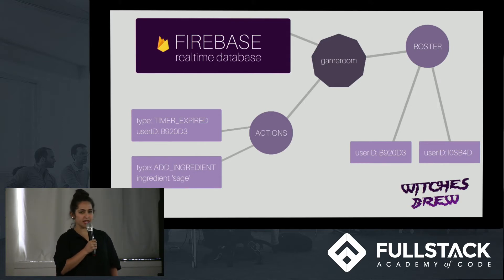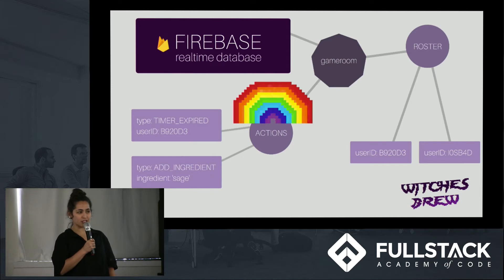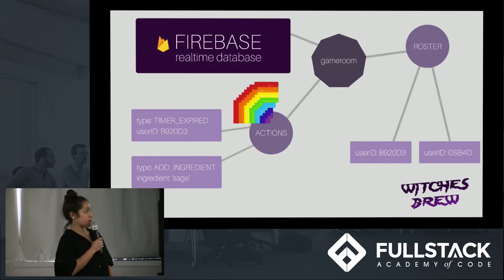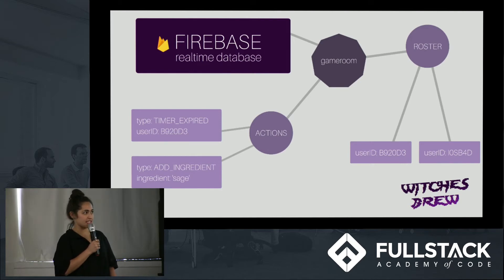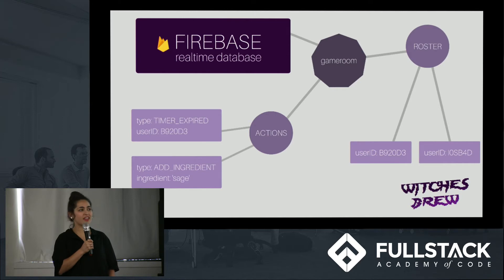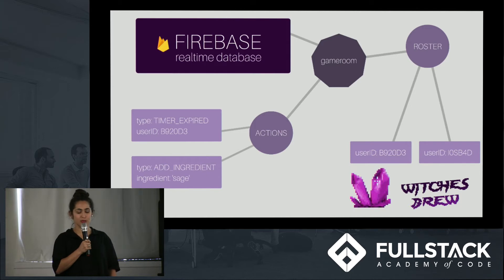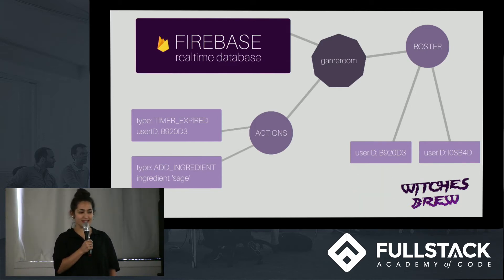We opted to store game state in Firebase's NoSQL database by storing individual actions as rows in the database. When a player takes an action, that action is added as a database record and it is seeded almost instantaneously to all of the other players. When that happens, the action will also trigger a change to our Redux store in the front-end, which will then trigger changes to the React components — those are the things that players are seeing when they're actually playing the game.